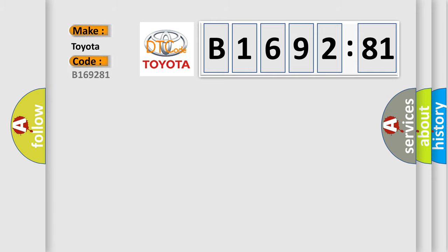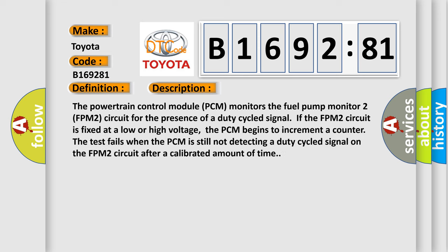So, what does the diagnostic trouble code B169281 interpret specifically for Toyota car manufacturers? The basic definition is: lost communication with fuel pump control module. And now this is a short description of this DTC code.